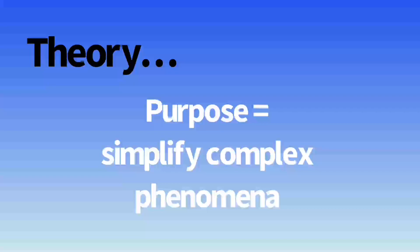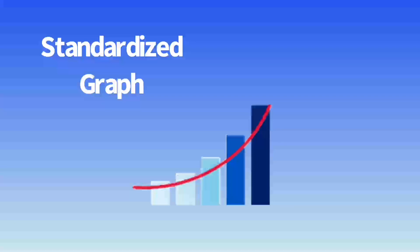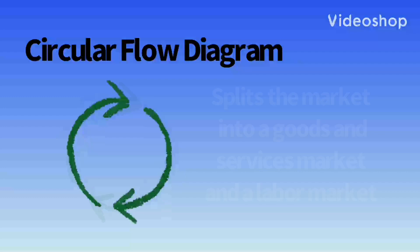Now to define theory — forget what you learned in bio. In economics, a theory is a depiction of how two or more variables interact. The purpose of a theory is to simplify complex phenomena. A model is how we test theories, and it can be as simple as a standardized graph.